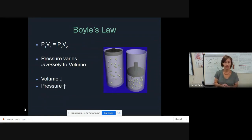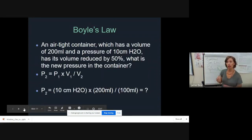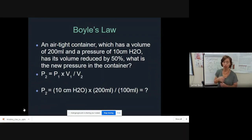This law explains exactly how we breathe, as well as the calculation shows how when we measure volumes in something called a body plethysmograph or a body box. This is how we technically measure volumes in pulmonary function testing. A quick example here: an airtight container which has a volume of 200 milliliters and a pressure of 10 centimeters of water has its volume reduced by 50%. What is the new pressure in the container?